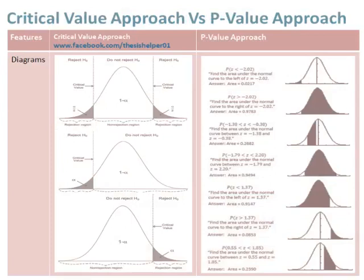A diagram helps illustrate how we compare both approaches. In the critical value approach, we compare scores — shaded areas are given for two-tail test, one-tail left, and one-tail right. Critical values are tabulated test statistic values that become the benchmark where the rejection region starts. If the computed value falls in the shaded rejection region, reject H-naught. In the p-value approach, seven diagrams compare areas of probability, with areas also shaded.